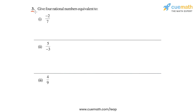In question 3 of this exercise, we have to give four rational numbers equivalent to each of the three rational numbers given. This is a very easy question. All we have to do is write any four equivalent rational numbers for each rational number.